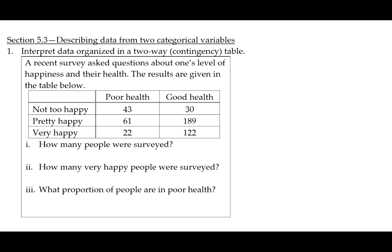The first learning objective in Section 5.3 is to interpret data organized in a two-way or contingency table. These are two different ways of labeling the same type of table. A recent survey asked questions about one's level of happiness and their health. The results are given in the table below.